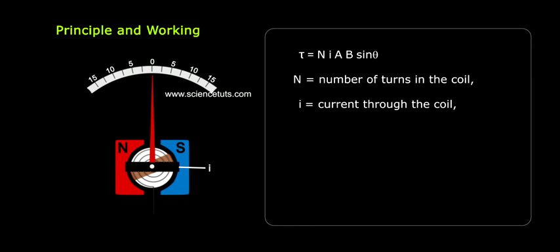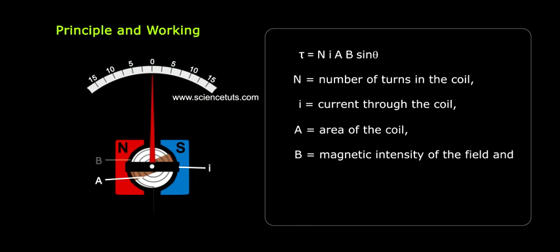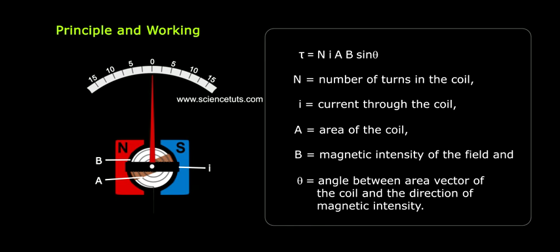I stands for current through the coil, A stands for area of the coil, B stands for magnetic intensity of the field, and theta stands for angle between area vector of the coil and the direction of magnetic intensity.